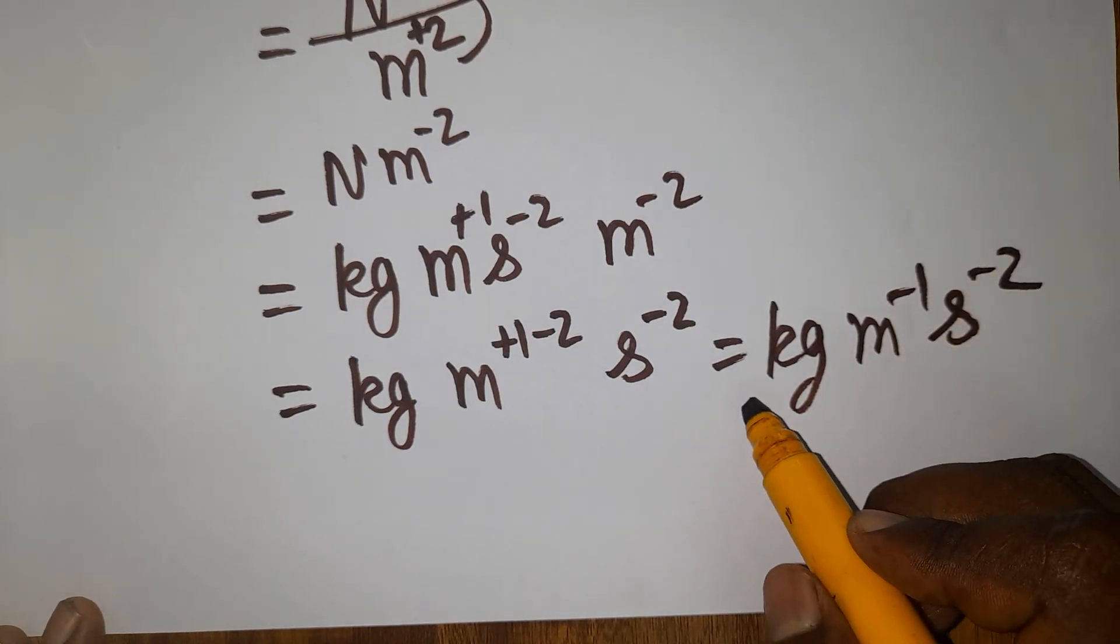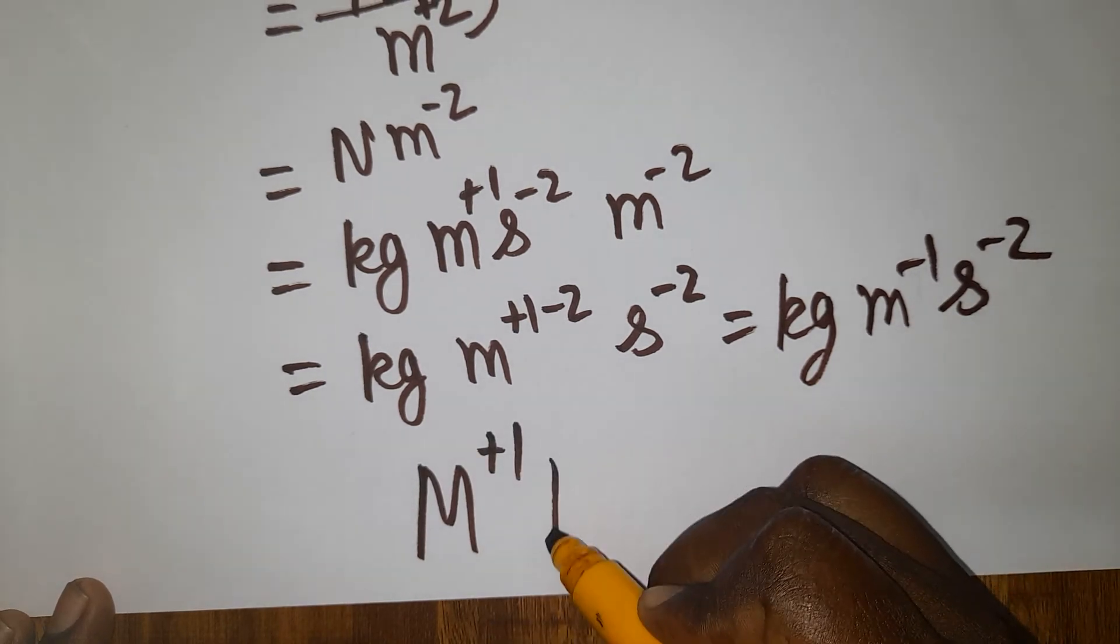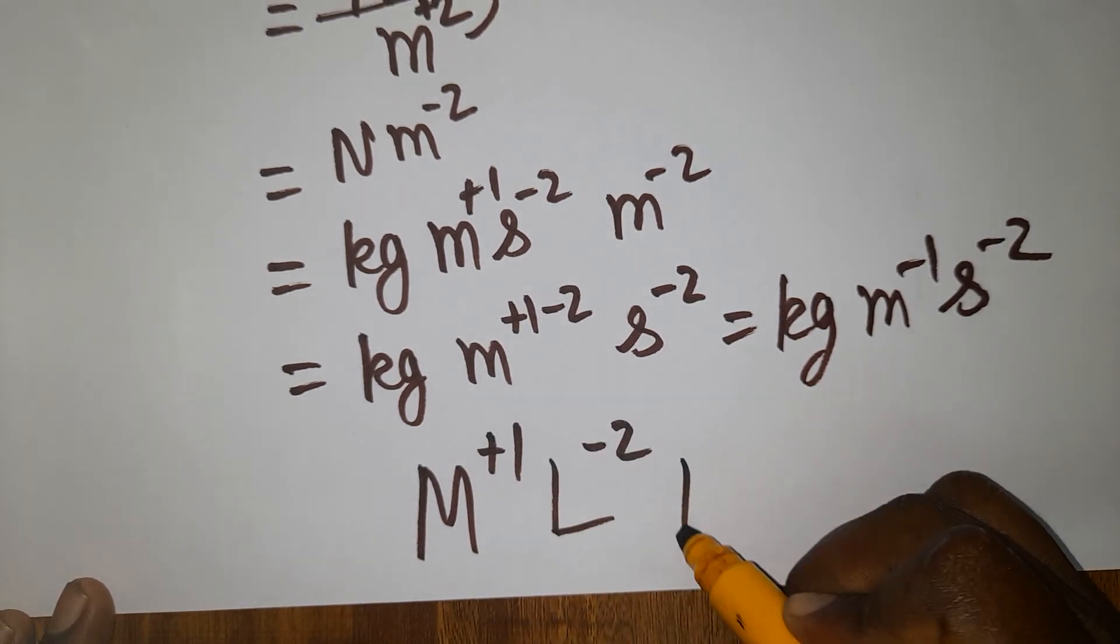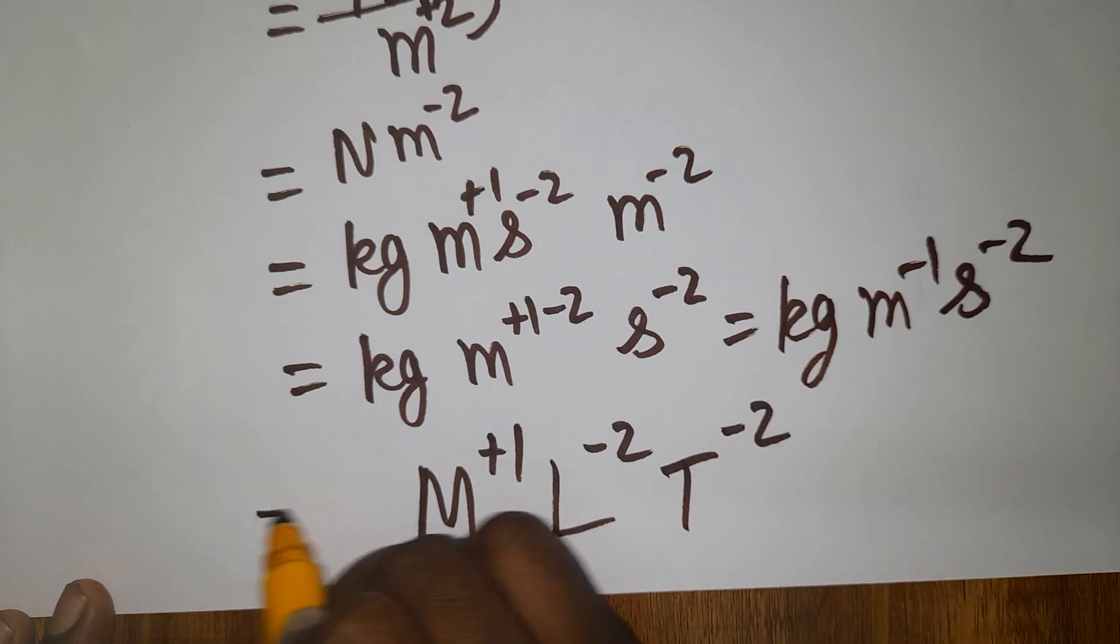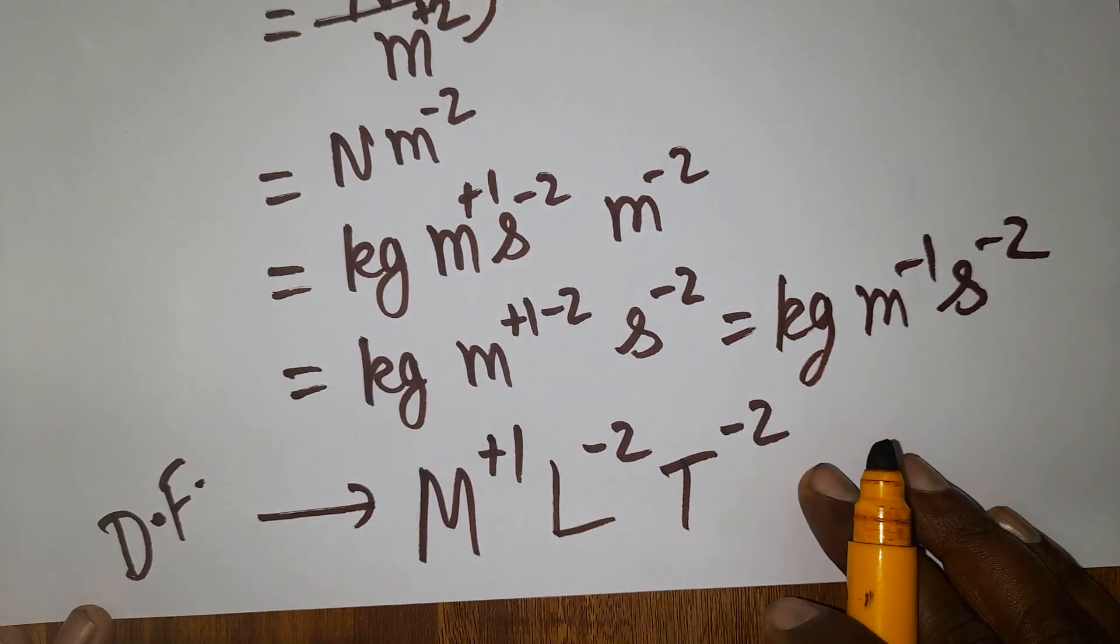Now what about the dimension formula? Mass M power plus 1, length L power minus 1, time T power minus 2. This is the final dimensional formula for surface tension. Thank you.